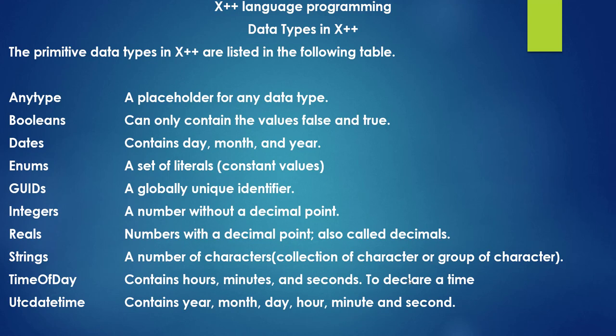Integers are numbers without a decimal point. Next we have Reals, numbers with a decimal point, also called decimals.